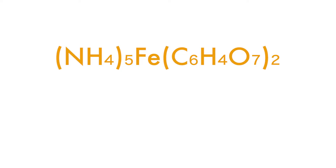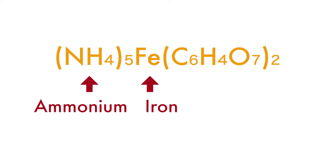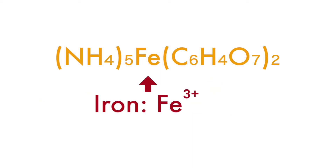Ferric ammonium citrate, which is one of the chemicals we add to the paper, has a chemical formula that includes an ammonium ion, iron, and citrate, which is an organic compound meaning it contains carbon. This chemical is sensitive to ultraviolet light. When it's exposed to ultraviolet light, the iron in this compound is reduced from iron(III) into iron(II), because it gains an electron. That's step one.